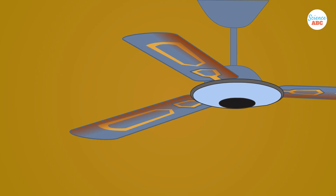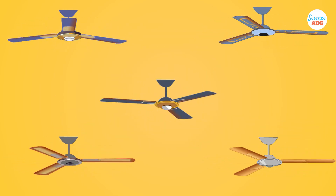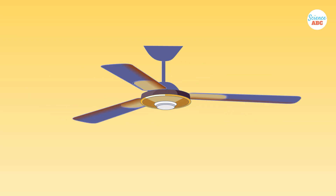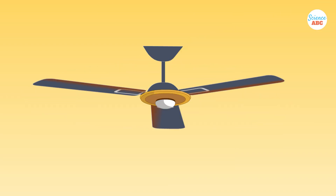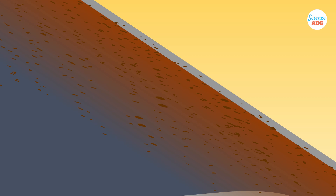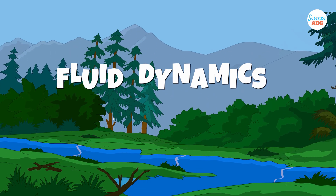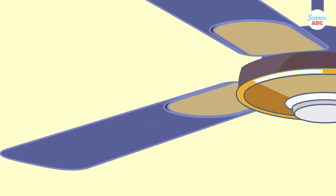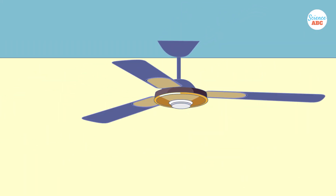Understanding why all types of fans become dust magnets, no matter their material, requires another field of science: fluid dynamics. While static electricity accumulation applies to plastic fans, this doesn't occur for metal fans, though dust noticeably collects on their leading edges. Fluid dynamics is the study of the motion of liquids and gases. Applying it to a ceiling fan scenario, the air speed at the fan blade's surface is zero. As you move away from the fan blade's surface, the air's speed and movement increases.